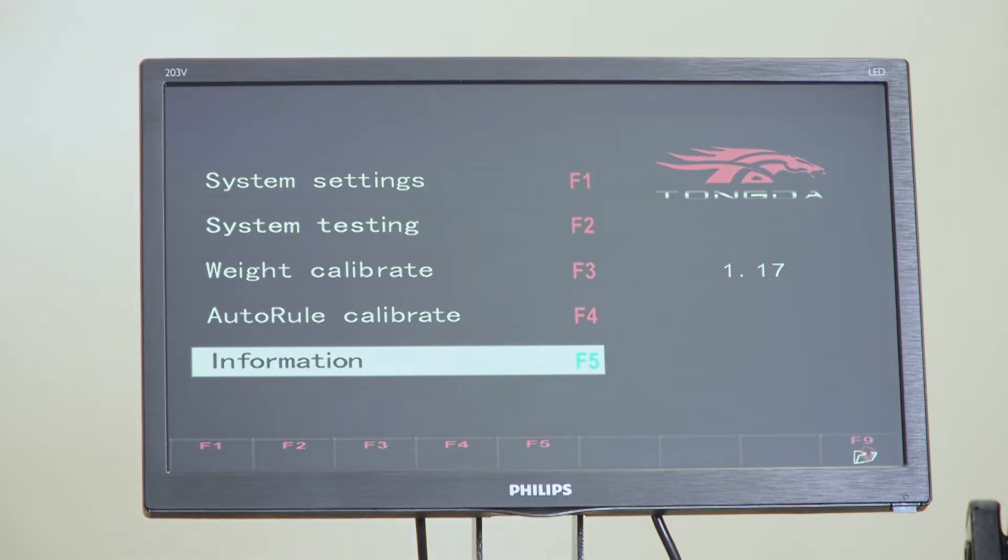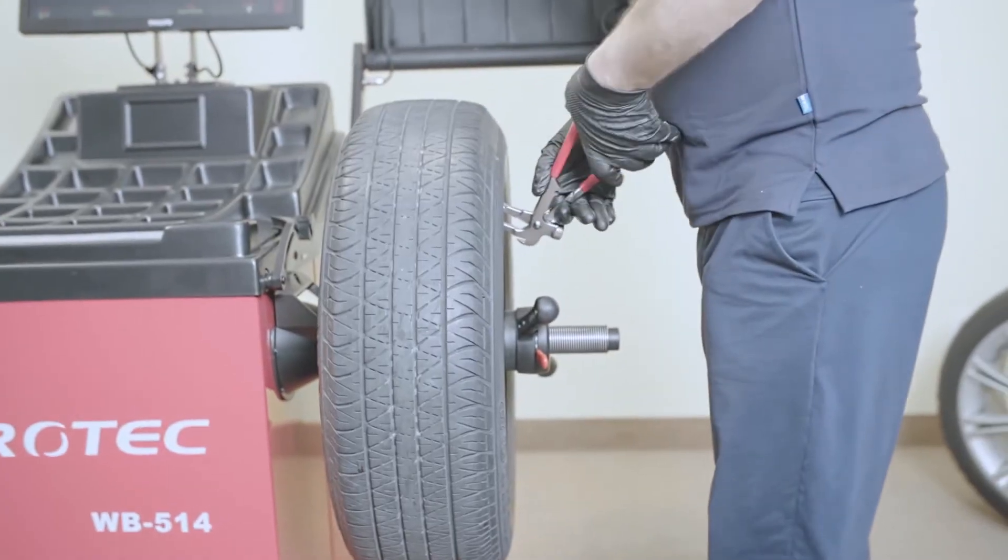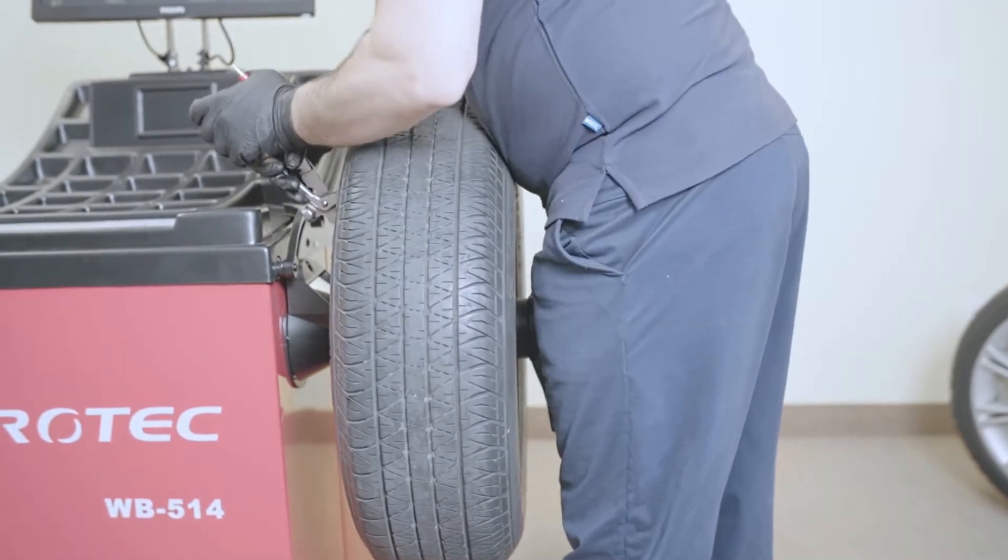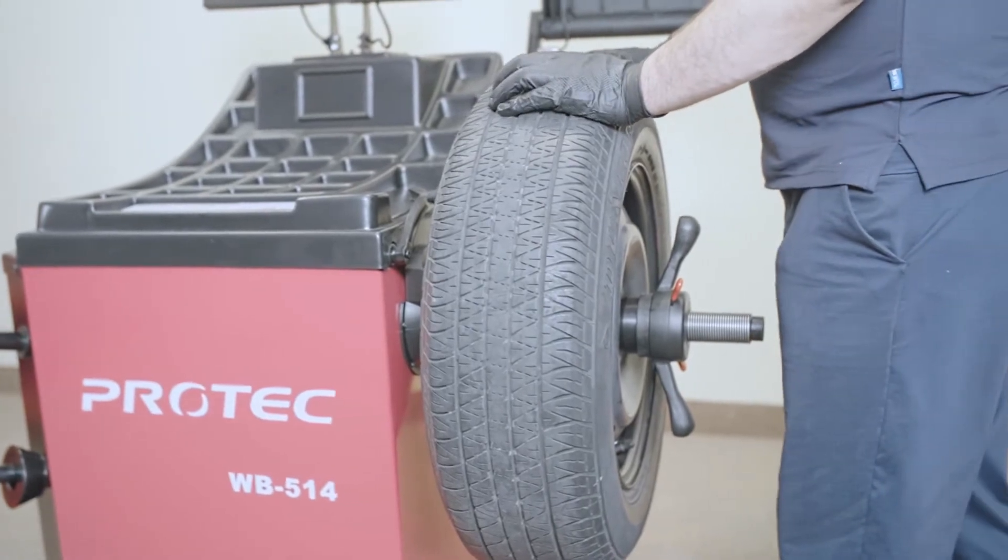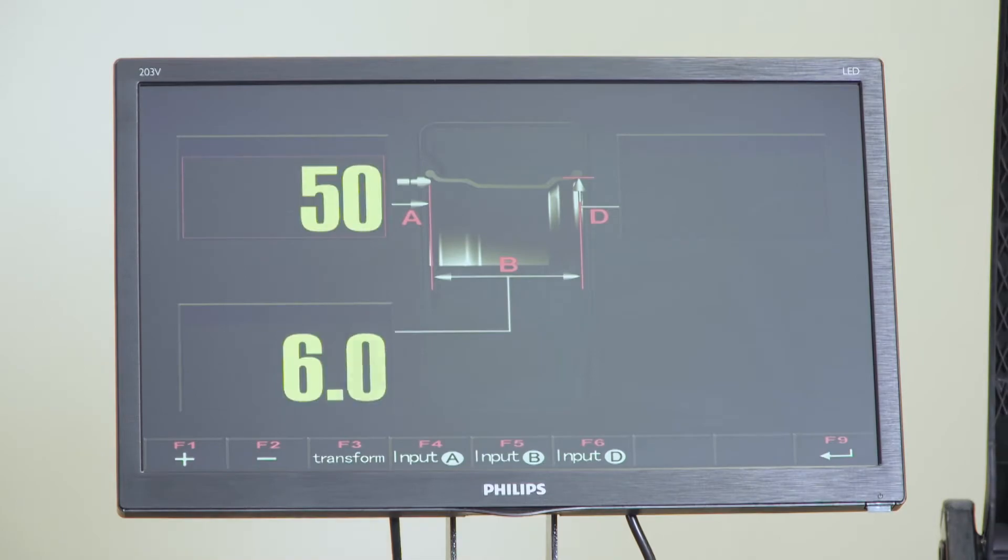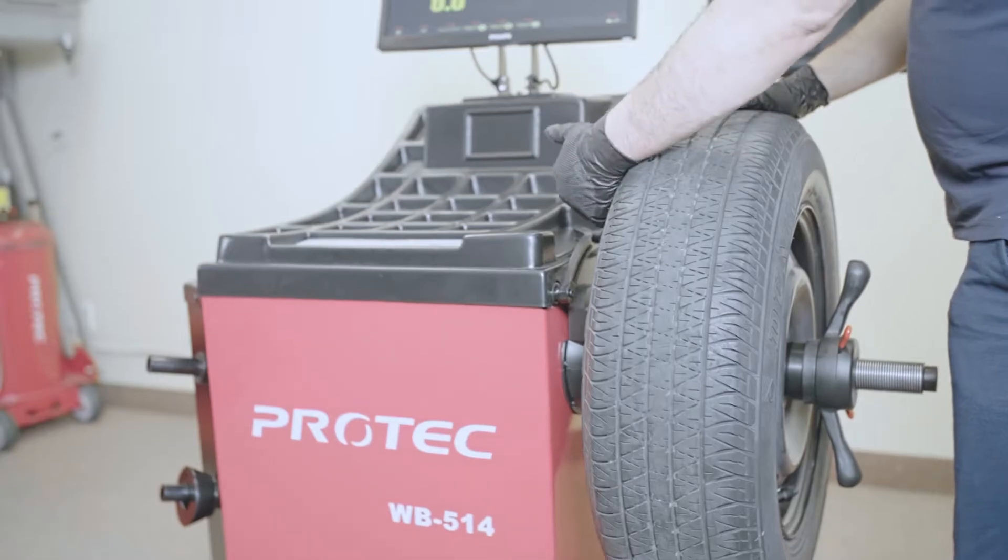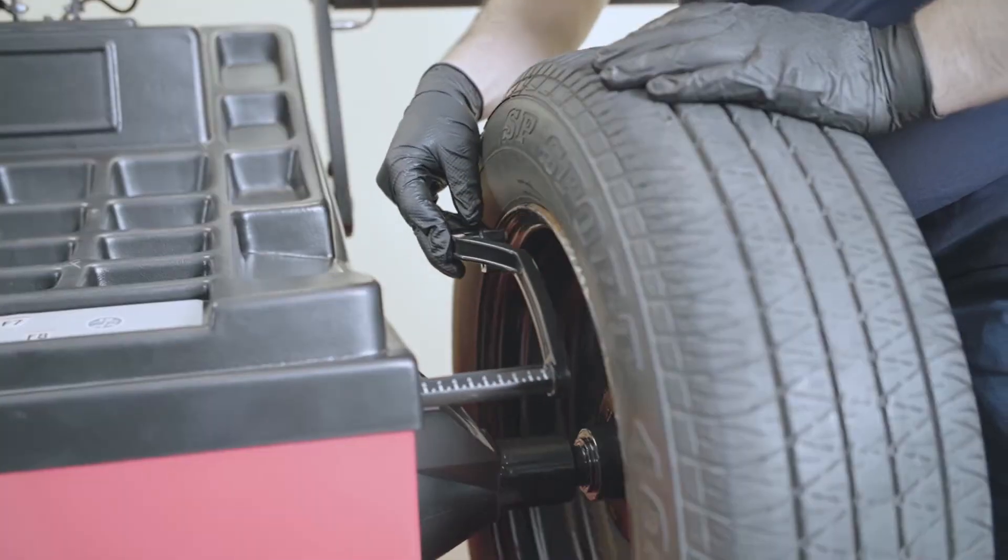Go to weight calibration. Hit F3. We're going to remove all the weights from the wheel. Once you've got your 14 or 15 inch rim installed, you're going to hit F3 to input the data. Tell the machine the distance, the width, and the diameter. Pull the ruler.